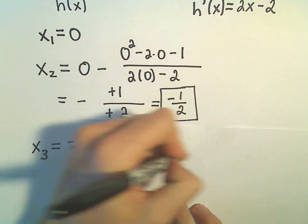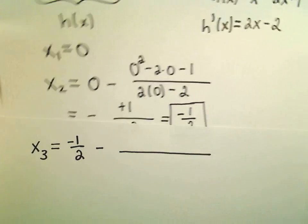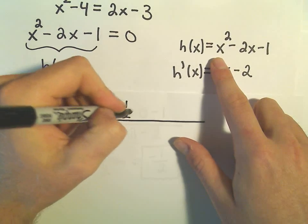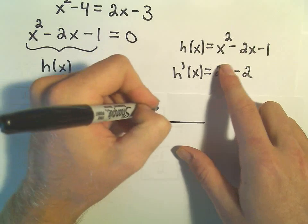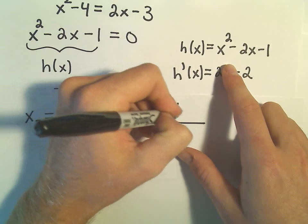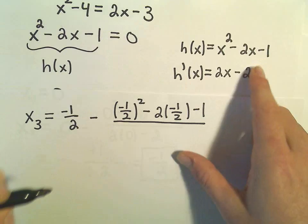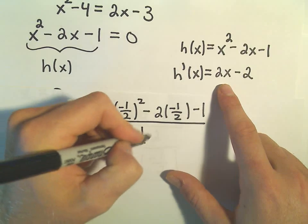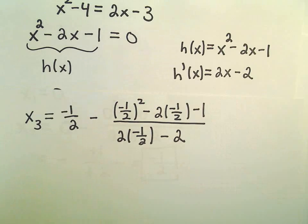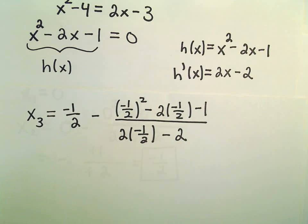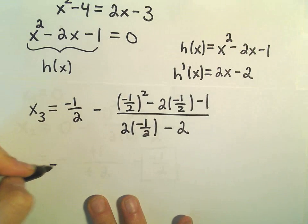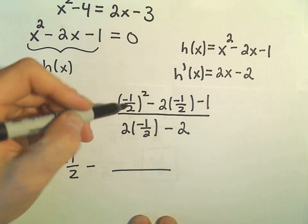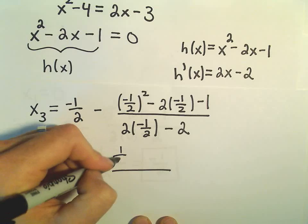And then we plug negative 1 half back into our original function. So negative 1 over 2 squared minus 2 times negative 1 over 2 minus 1. And then we have to plug that same value into our derivative and put that in the denominator. And now we've got to simplify this a little bit. So we've got negative 1 half minus negative 1 half squared is going to be a fourth.